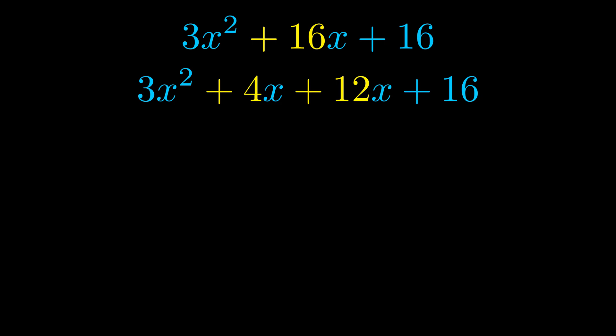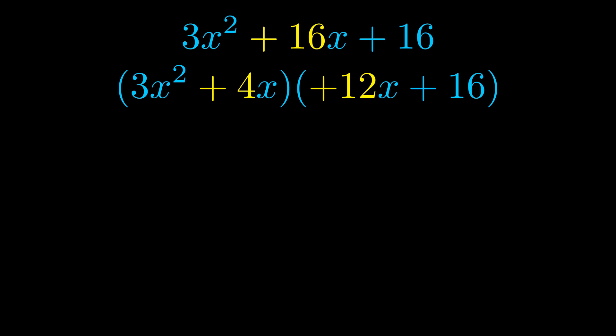Once we've done this we go ahead and we put parentheses around the first term and the last term. And we do that so that we can take the greatest common factor out of both terms. We can see the greatest common factor is now outside in green.